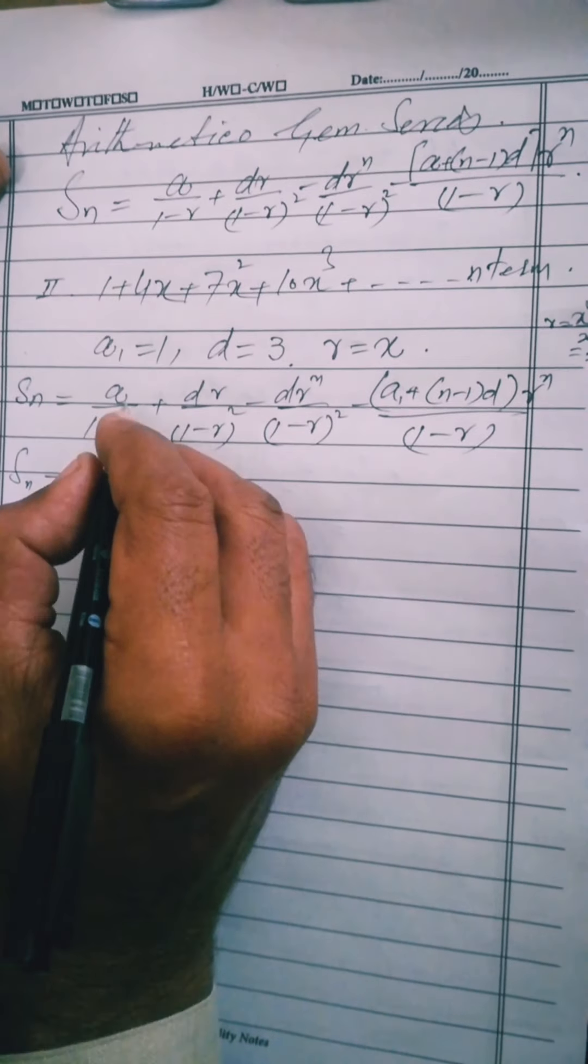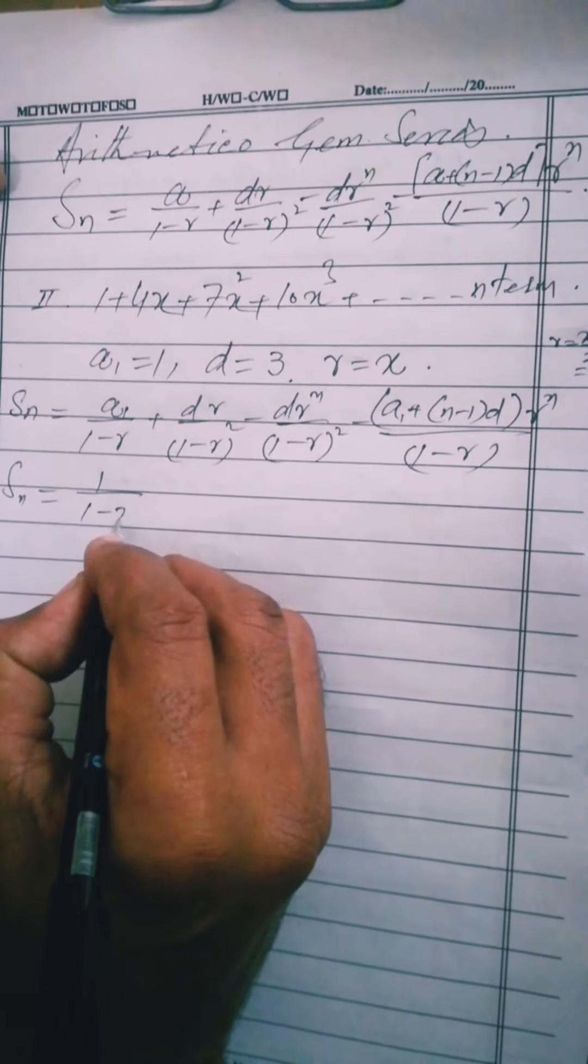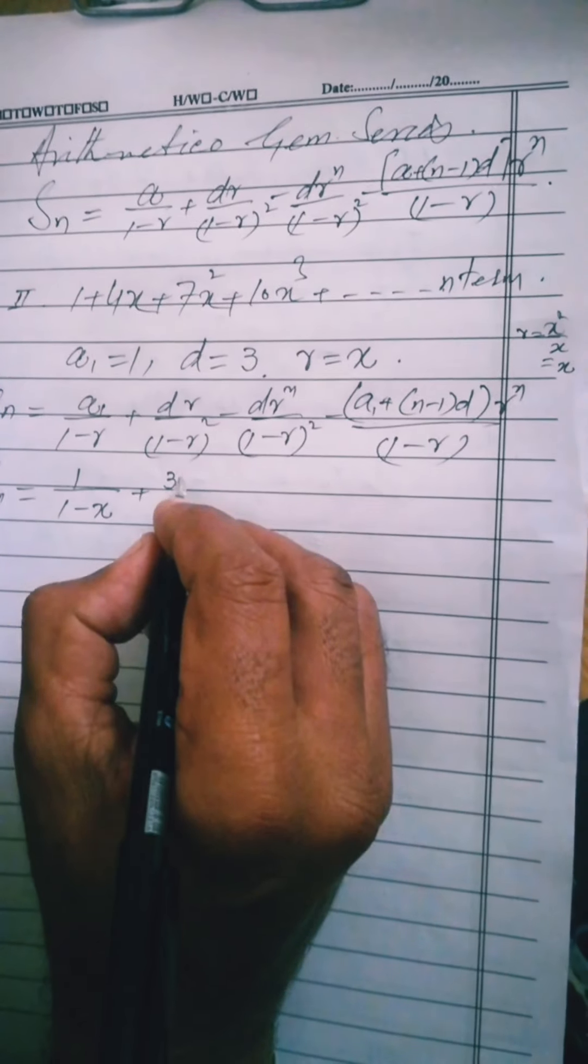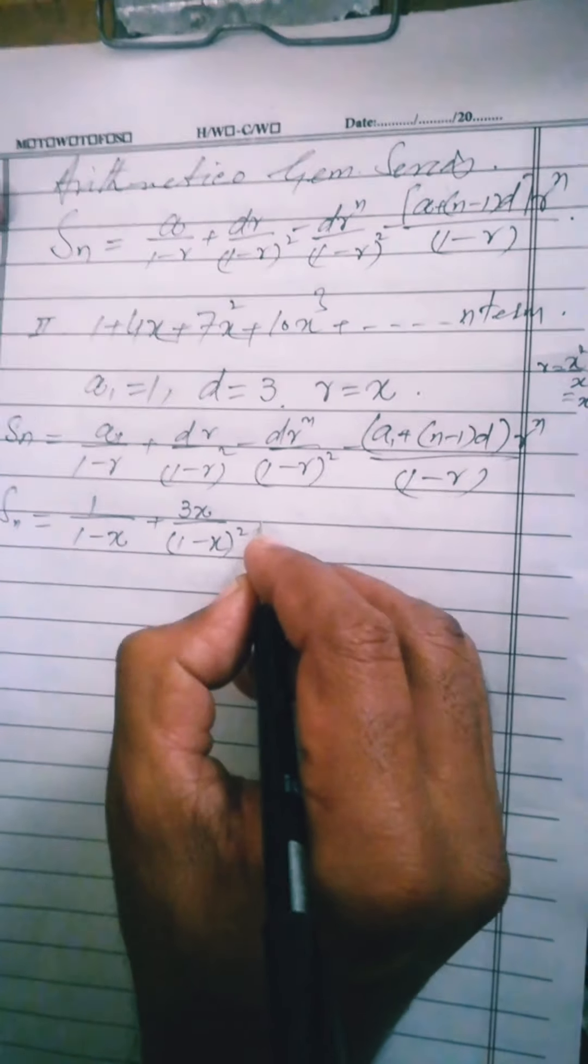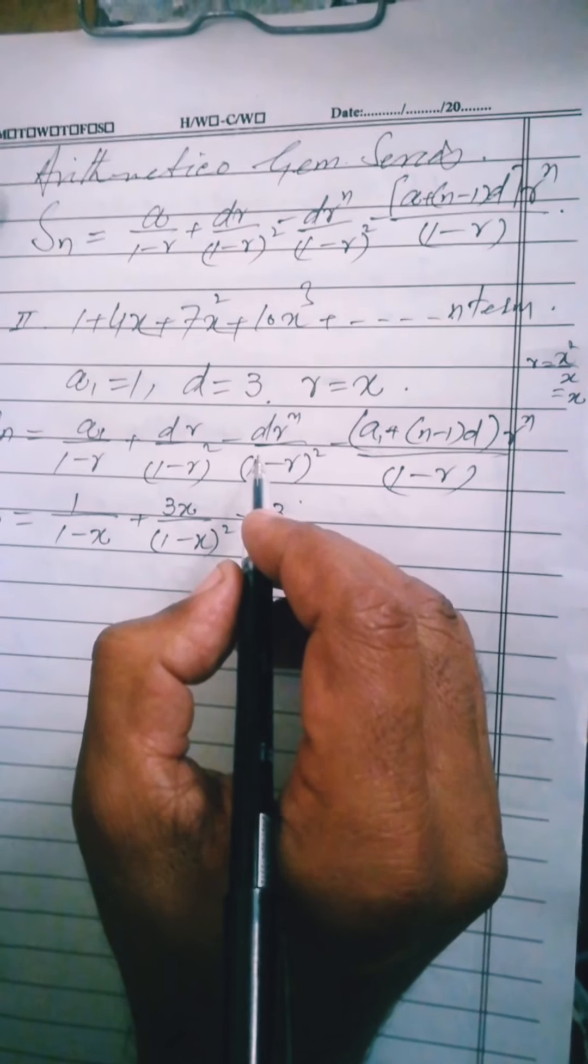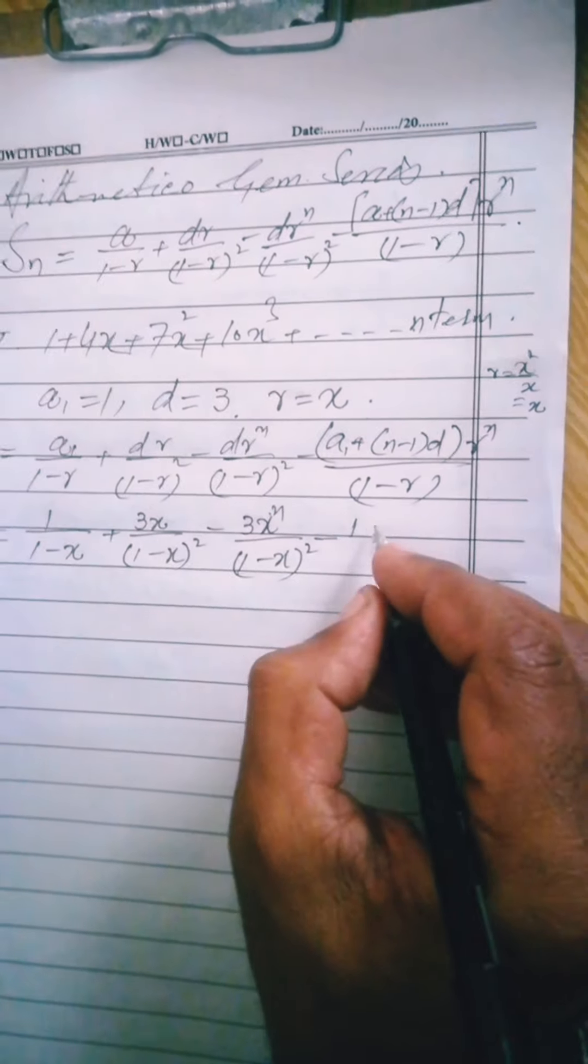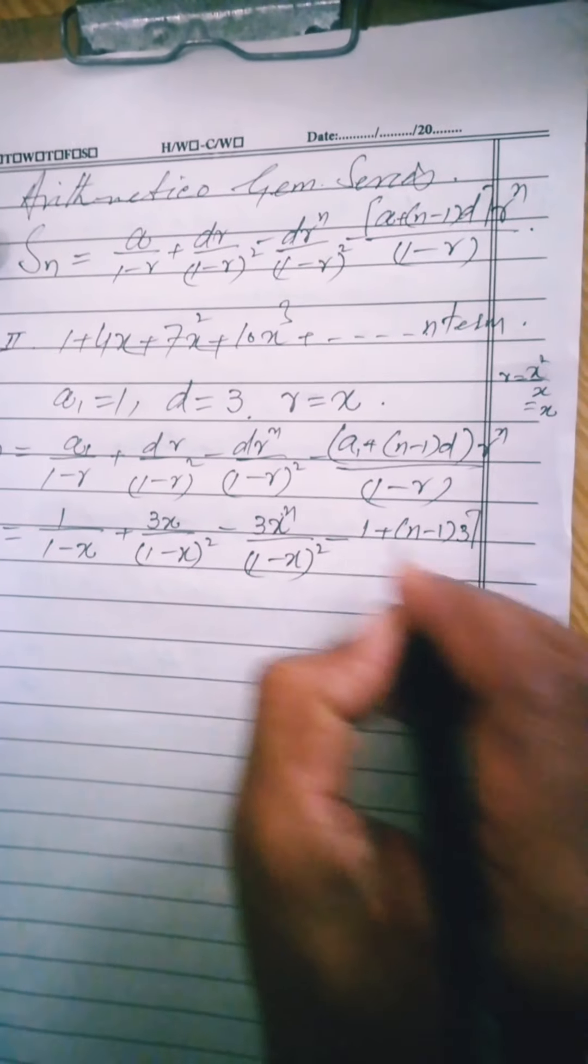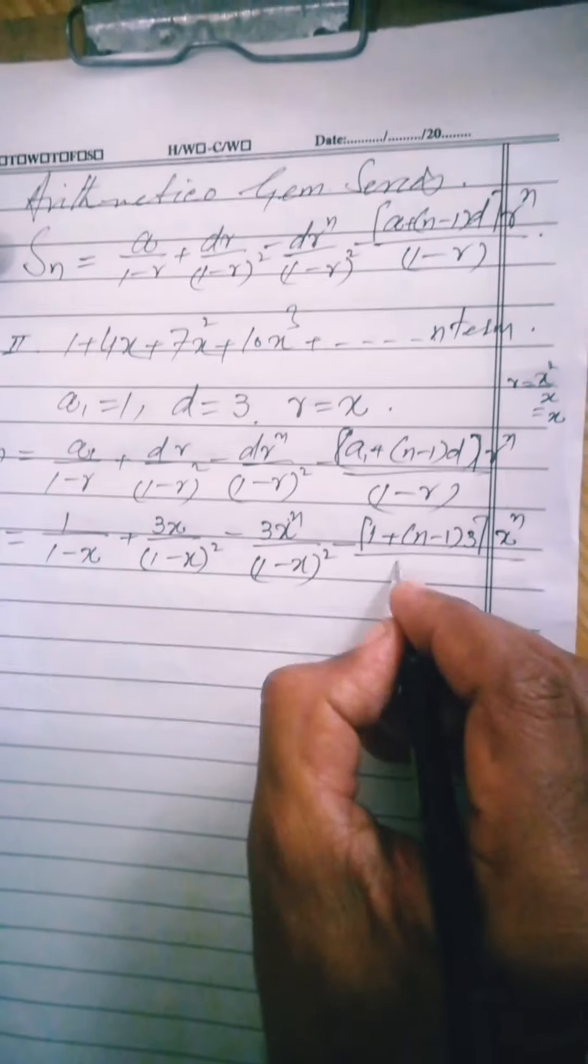This is a1 or a, first term, so 1 divided by 1 minus r. 1 minus r value is x, plus d. d value is 3. So 3x divided by 1 minus r value is x, and square minus. The value of d is 3 into r power n mean x power n divided by 1 minus x square, plus n minus 1 into d which is 3 into r power n mean x power n divided by 1 minus x.